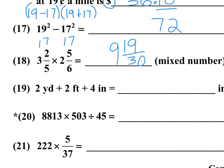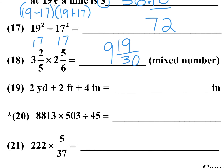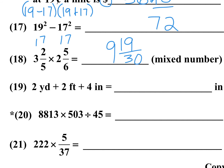Number 19: they want the answer in inches. 36 inches is one yard and 12 inches is one foot, so 36 plus 12 is 48. You've got two of them, so 48 plus 48 is 96, plus 4 more is 100 inches.